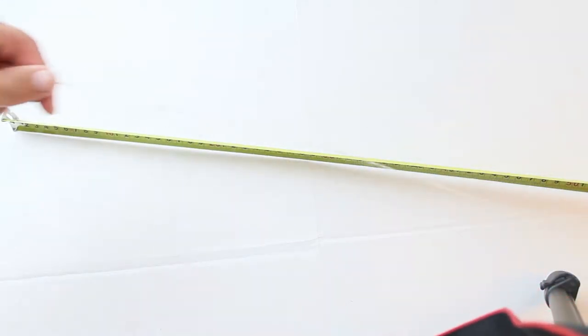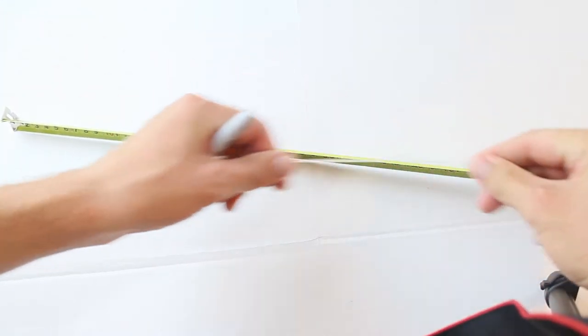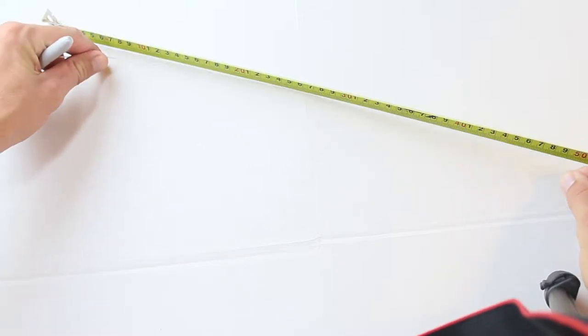To string using the one-piece stringing method, we're going to measure out the string, but instead of cutting the string, we're actually just going to make a mark on the string at a certain point.